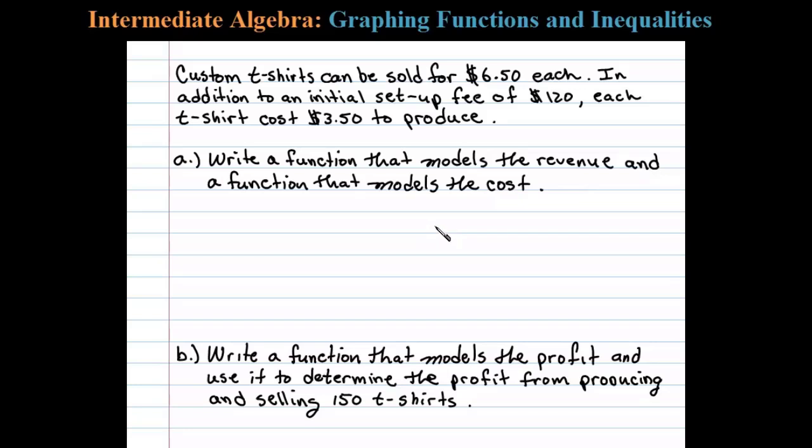Let's begin by identifying our variable. Let x represent the number of t-shirts that are produced and sold. The revenue denoted with a capital R is equal to the price times the number of t-shirts sold. In this case, each t-shirt can be sold for $6.50 each, so the revenue is 6.50 times x.